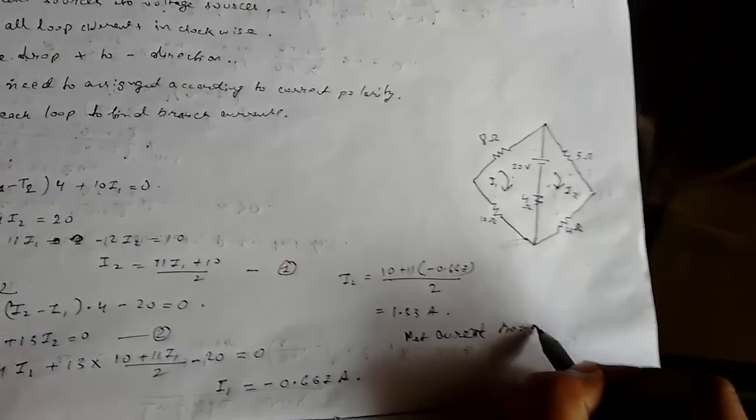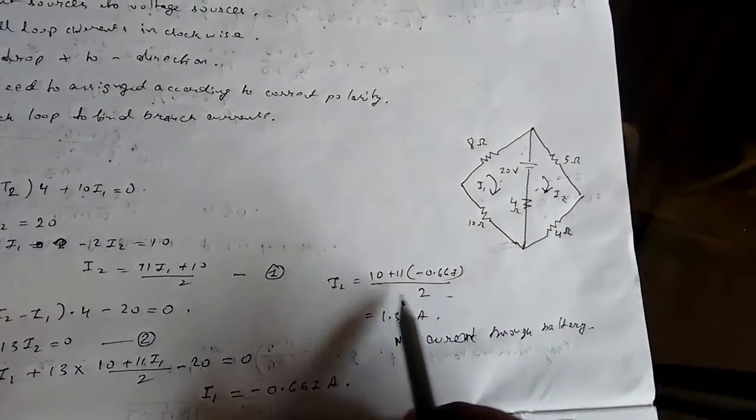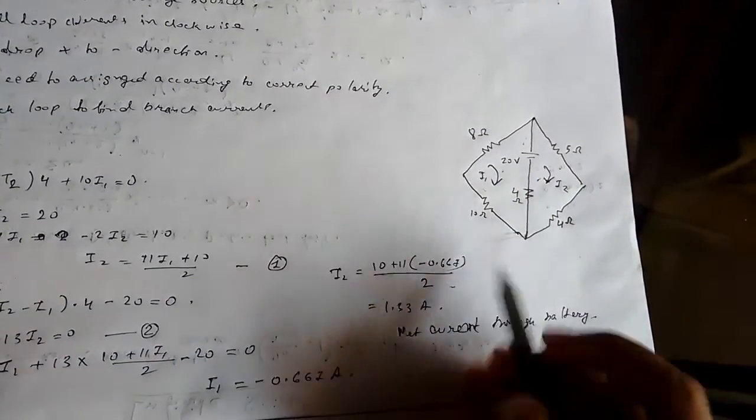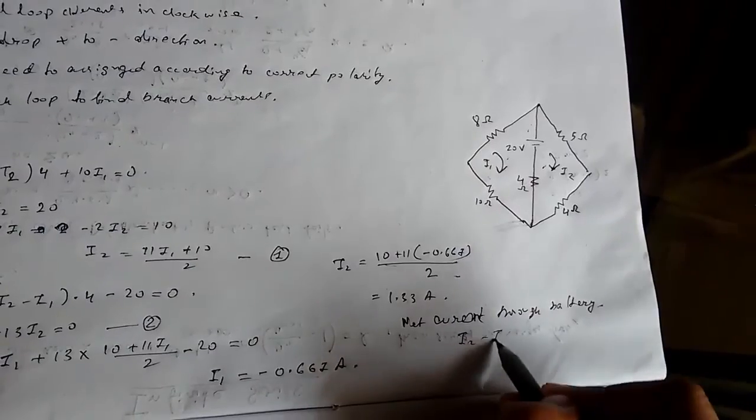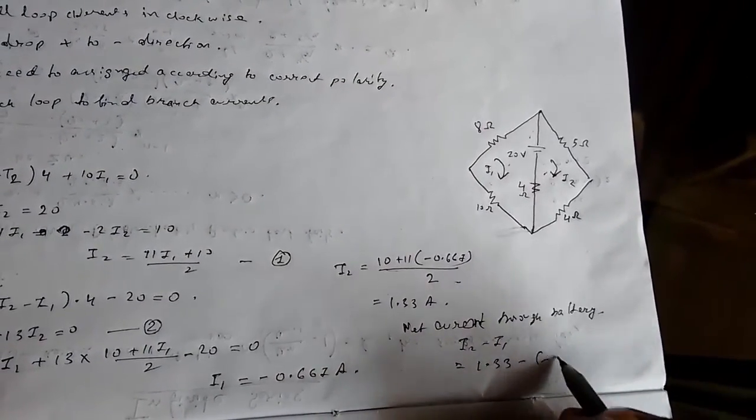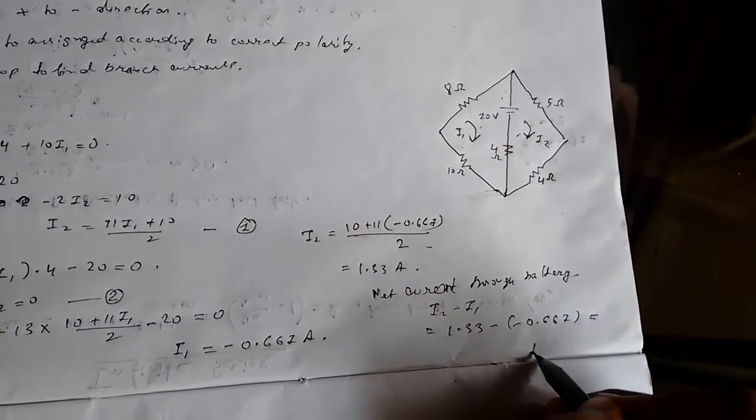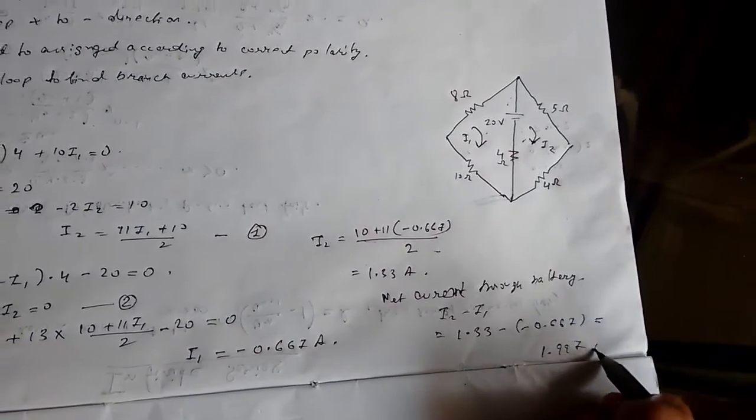So the net current through battery - we see that net current should be I2 - I1 in the direction I2 - I1. This will be 1.33 - (-0.667), which in turn equals 1.997 amperes.